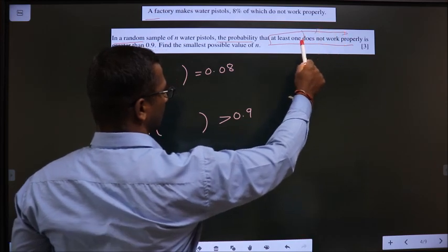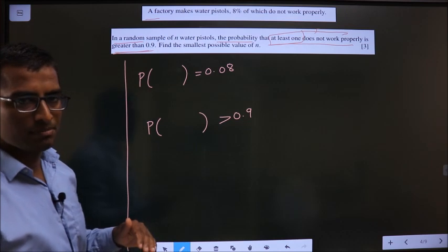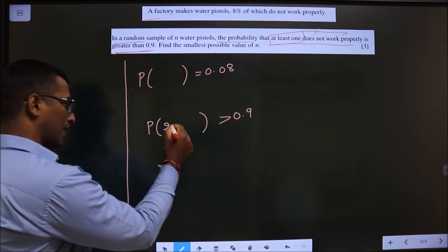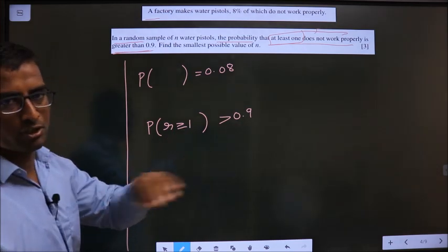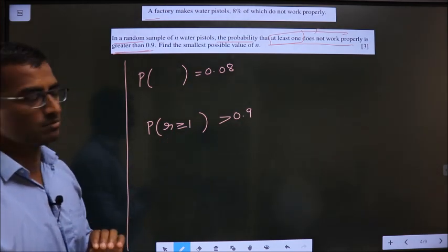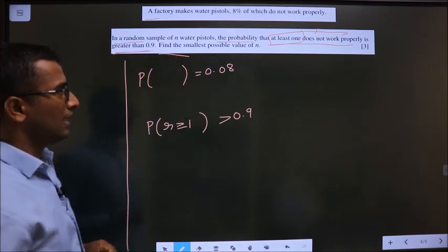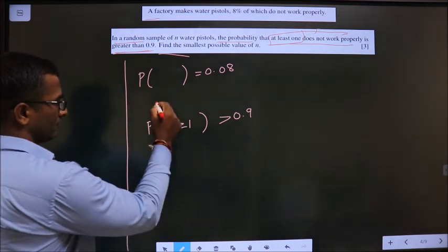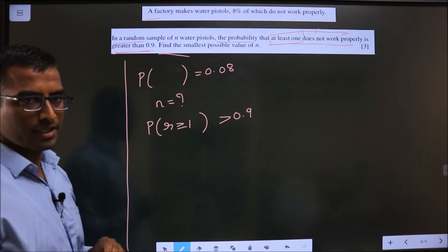At least 1. So mathematically, how do we write at least 1 means r greater than or equal to 1. At least 1 means 1 or more than that. And mathematically, we represent in this way. Clear now. Now, find the smallest possible value of n. So we need to find the value for n.